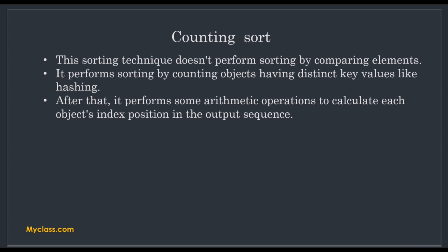After counting occurrences, it performs some arithmetic operations to calculate each object's index. We are calculating the correct index values that the array elements will hold after sorting. If n elements are there in one list, we are focused on all n elements, checking which elements are repeating and how many times one particular value is repeating. That is how counting sort works.